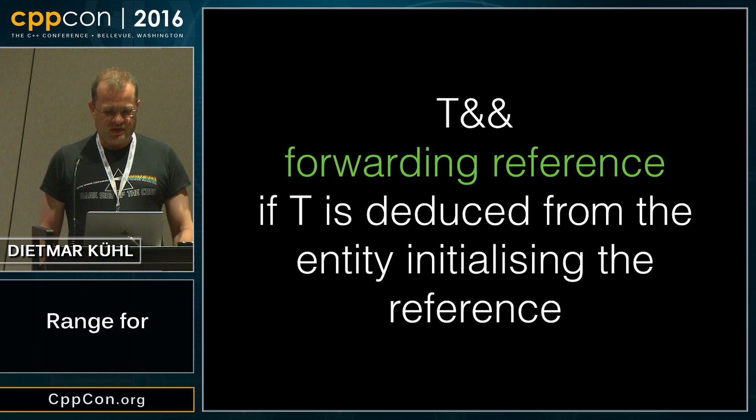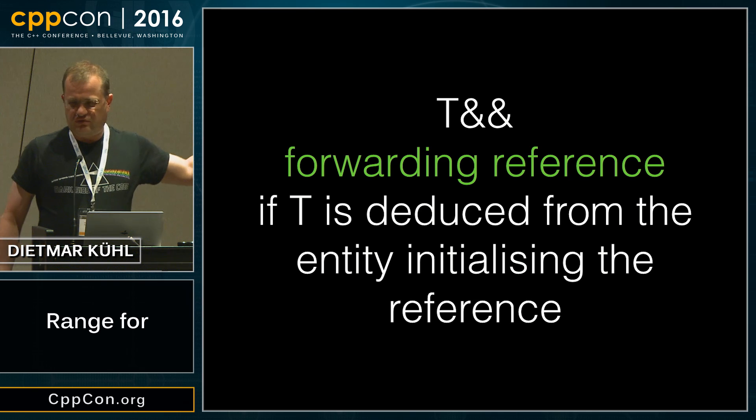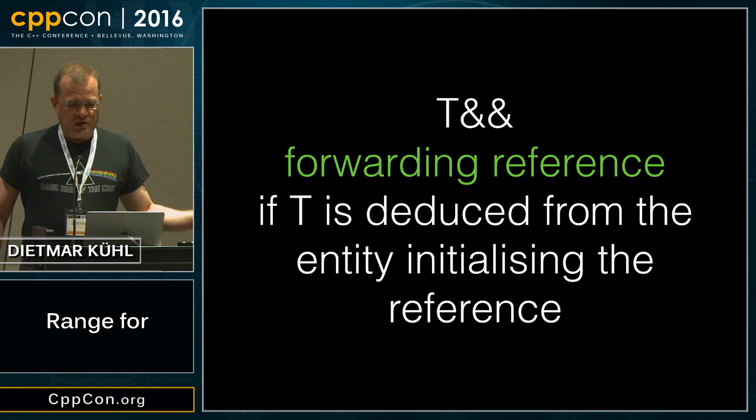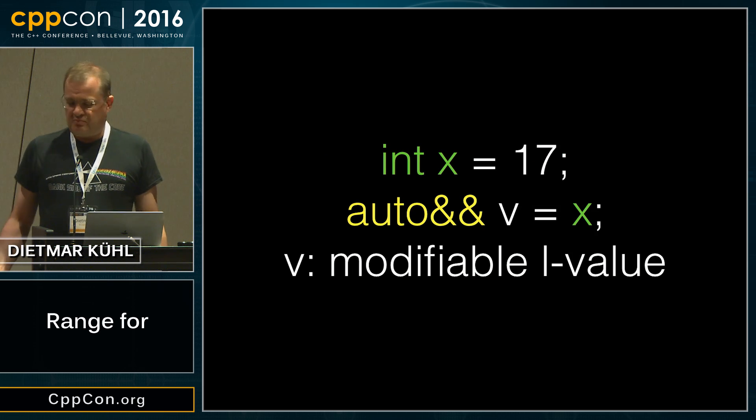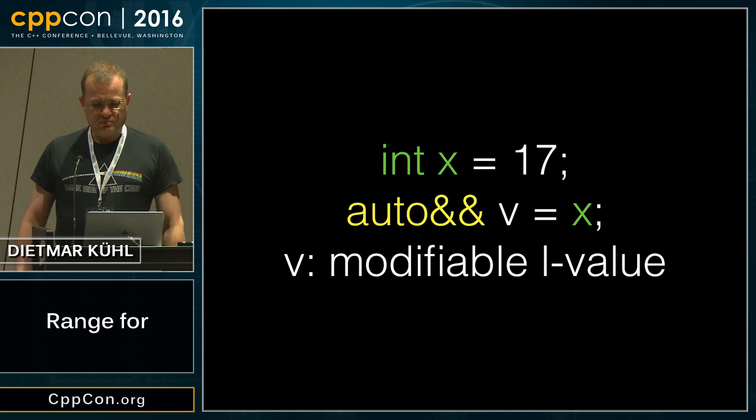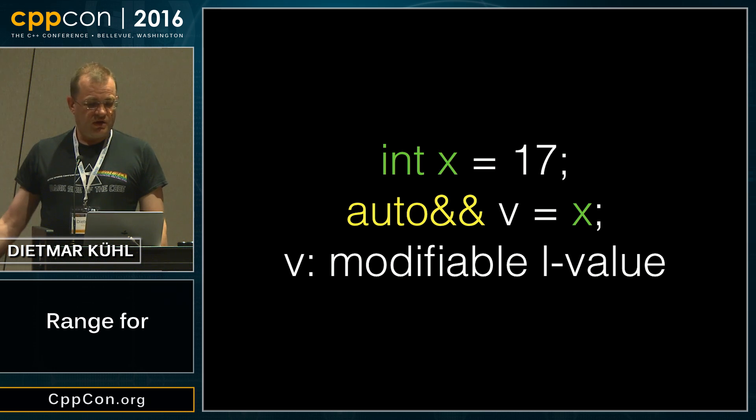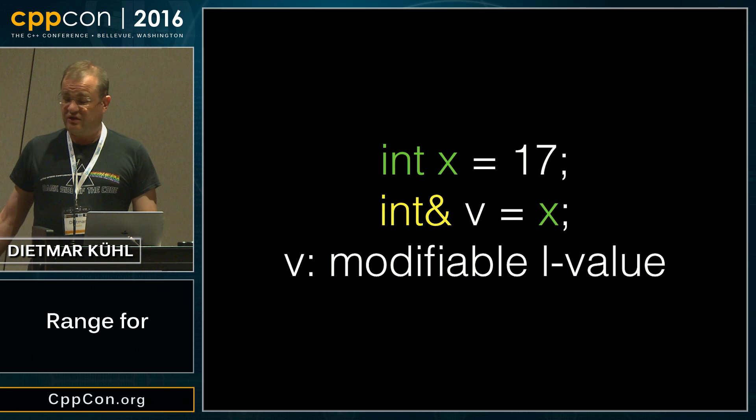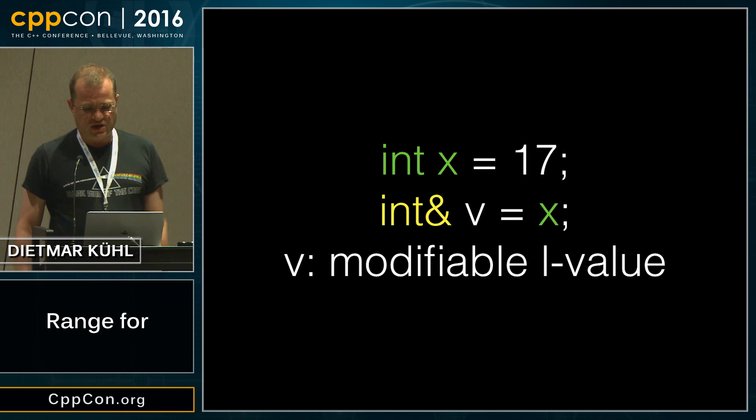So just quickly so that people understand what that is. Forwarding reference happens also not just with auto, but also if you have a T&& and T is deduced, it's a forwarding reference. These guys behave kind of funny. If I have a mutable l-value and I bind it to another reference, I could have written the declaration as well as int&. So it may be actually an int&.